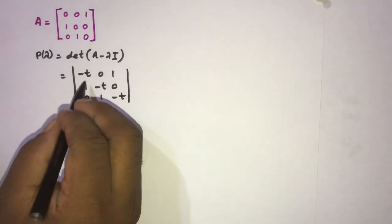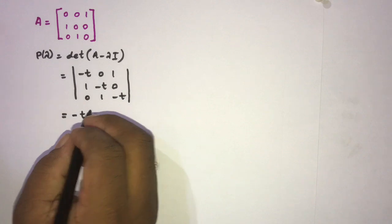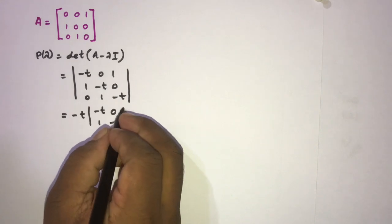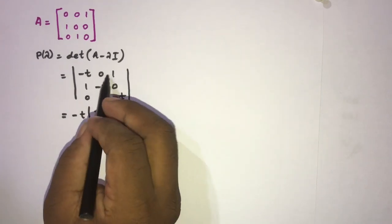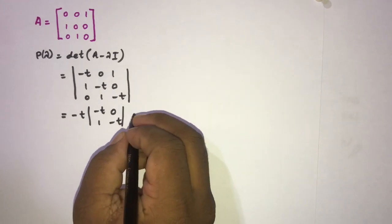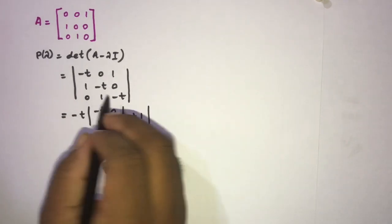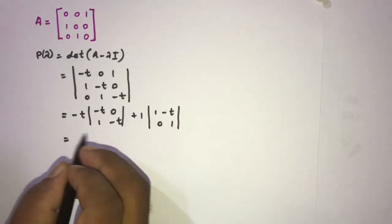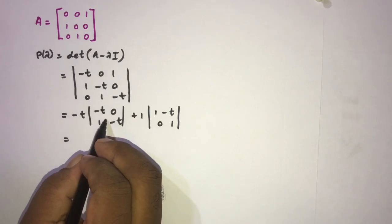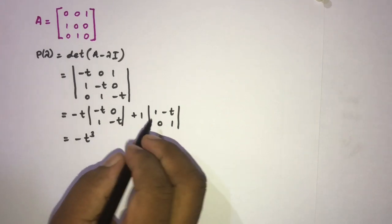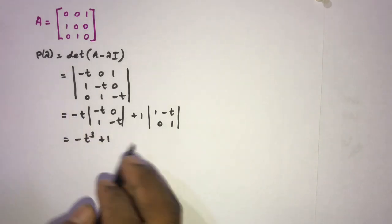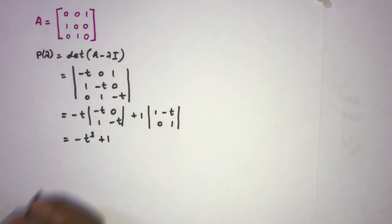Now we simplify this determinant by cofactor expansion. Taking minus t as the first cofactor, we get minus t times (minus t)(minus t) minus 0, then plus 1 times the remaining minor. Simplifying gives plus t² minus t³. So the characteristic polynomial is P(λ) = minus t³ plus t² minus t plus 1, which simplifies to minus t³ plus 1, or equivalently t³ minus 1.